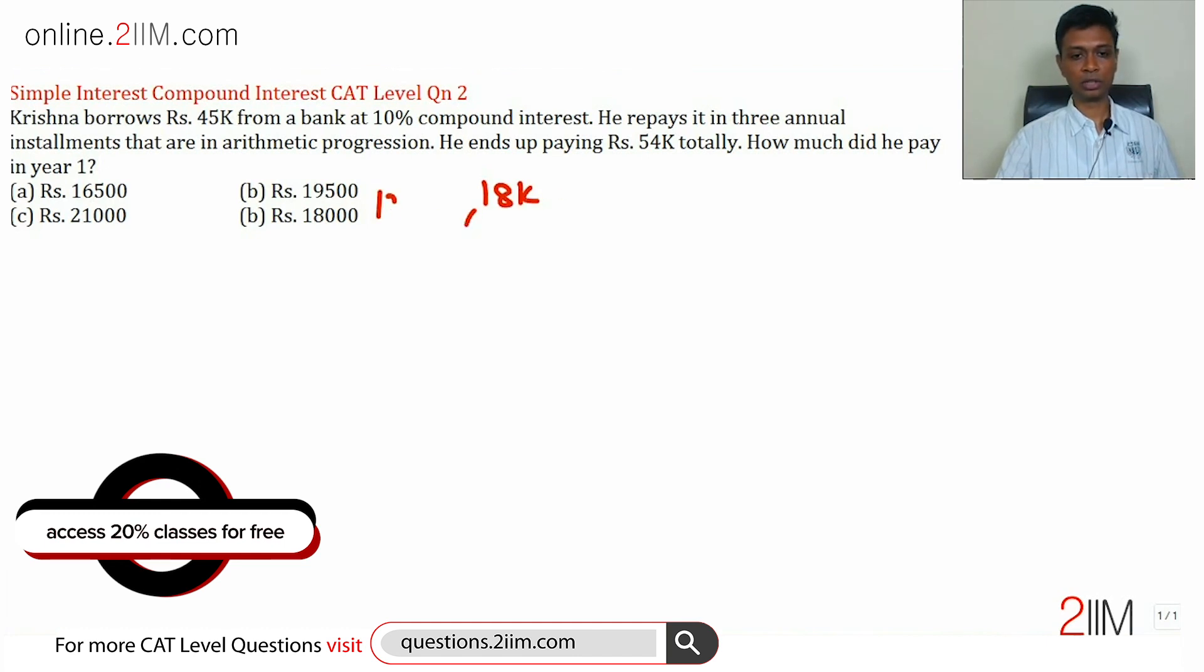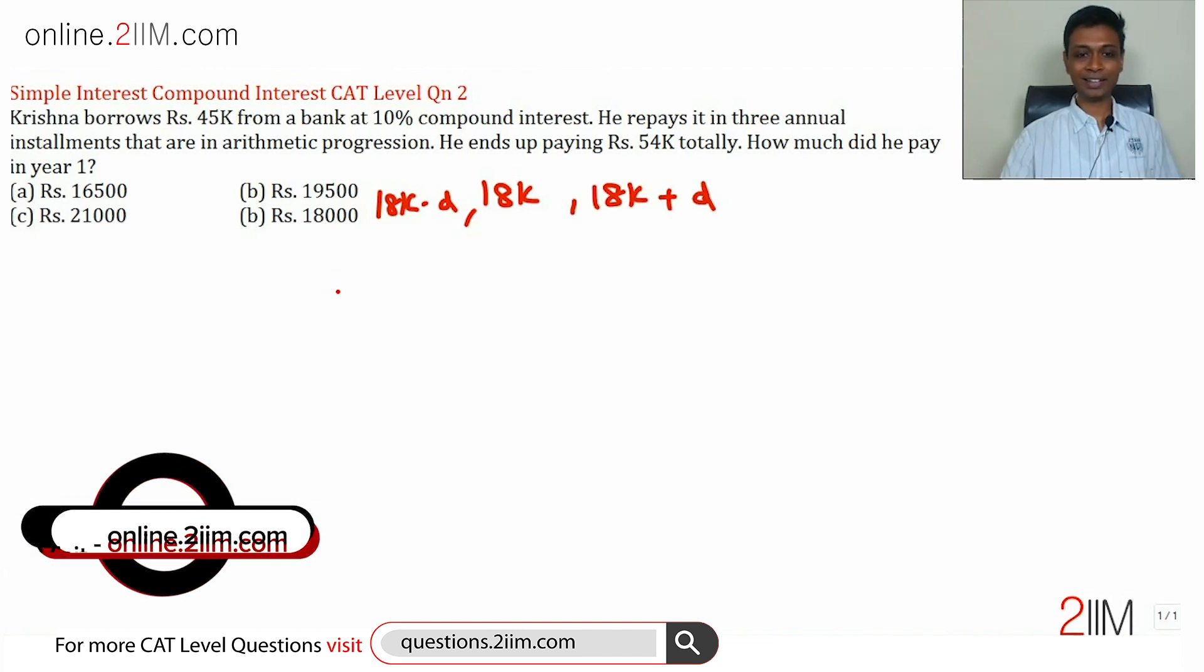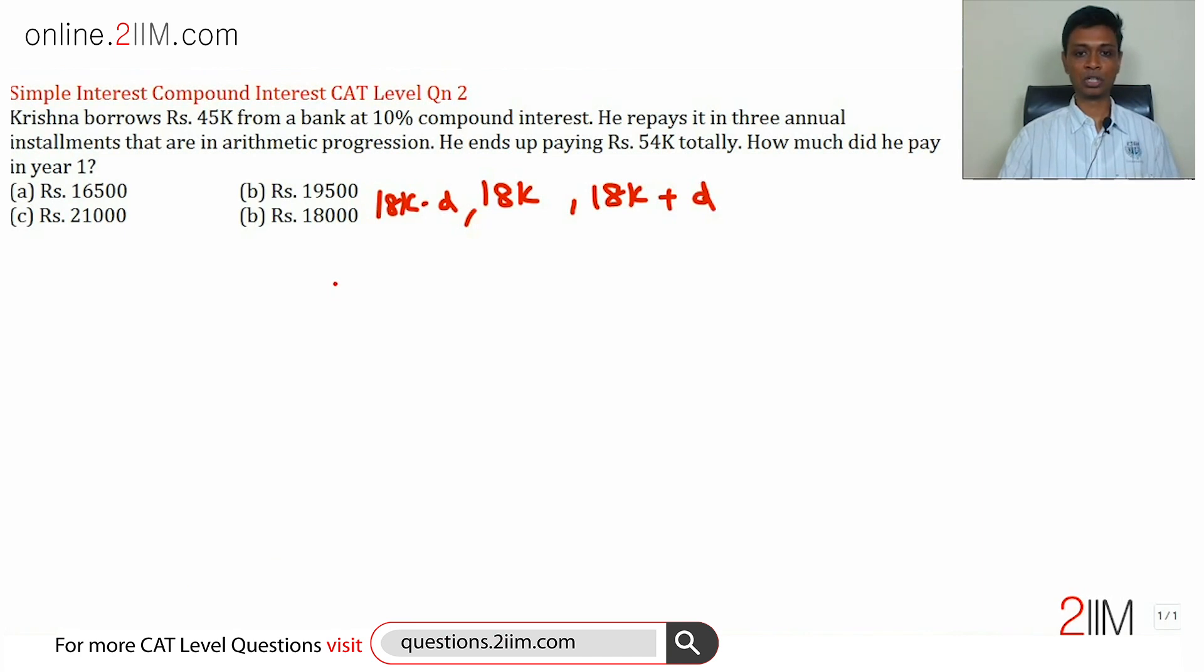The second year he paid 18,000. First year was 18,000 minus D, where D is the common difference, and third year 18,000 plus D. It's a very simple idea but extremely powerful—we'll use this to build further.